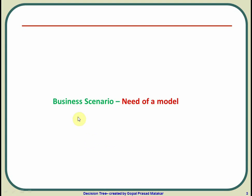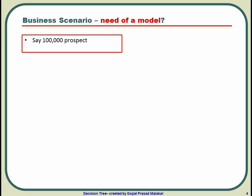Let me explain the business need for a model. Suppose there were 100,000 prospects and you sent mailers to all of them, but only 1,000 took up the product. That's a 1% response rate. If your cost of acquisition was $2 per mailer, you have spent $200,000, and only 1,000 products were sold.